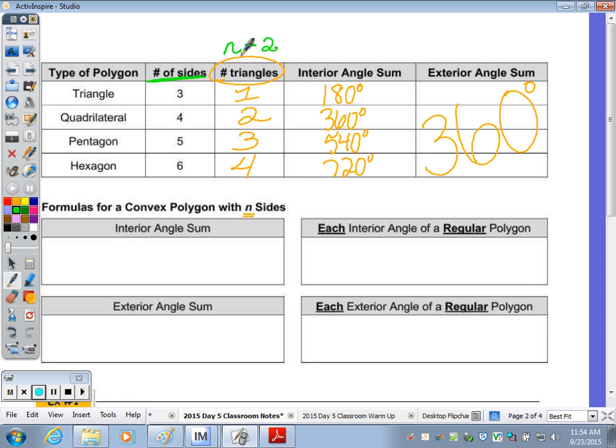To find an interior angle sum, that means what do all of them add up to, you just use the formula n minus 2 times 180, or you can sketch it and break it up into triangles. Exterior angle sum is always 360.